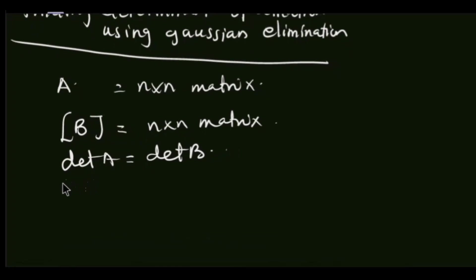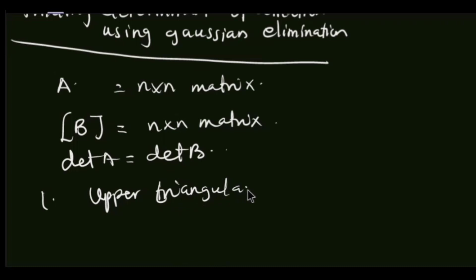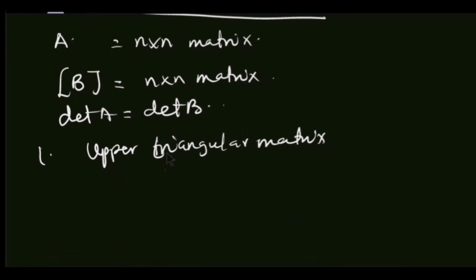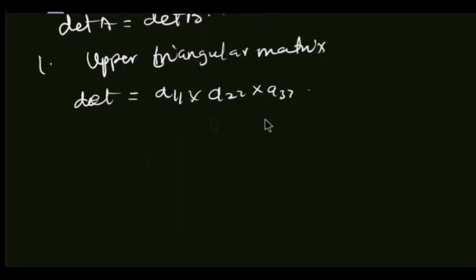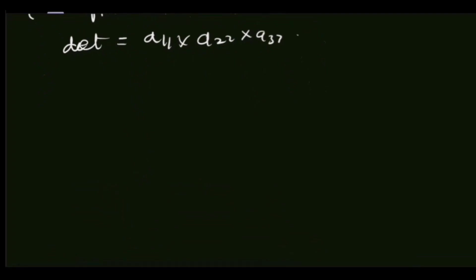The second part is that when you have an upper triangular matrix and you want to find its determinant, the rule says the determinant is simply formed by multiplying the elements on the diagonal — A11 by A22 by A33 — and that gives us our determinant. These are the two theorems we are going to base on to apply Gaussian elimination to solve for our determinant.